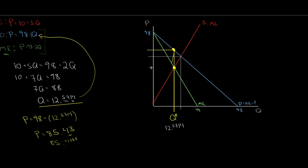That's how we work out equilibrium quantity and price for a firm with market power. In this case we said monopolist, but the same applies to an oligopolist or a monopolistically competitive firm — any firm with market power, with marginal revenue twice as steep as the demand curve.